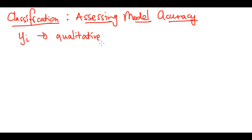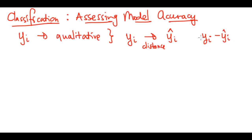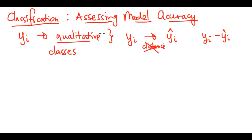It really does not make sense to measure the distance between the actual y_i and the predicted y_i. We cannot apply y_i minus y_predicted like we did in the regression setting, because here we are talking about qualitative variables — distinct classes. Many concepts like the bias-variance trade-off still apply to the classification setting, with only a few changes, because these y's are no longer numerical.